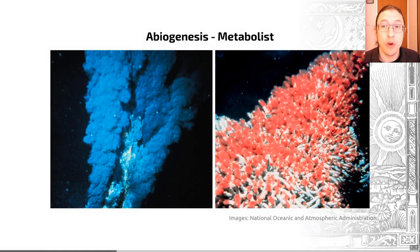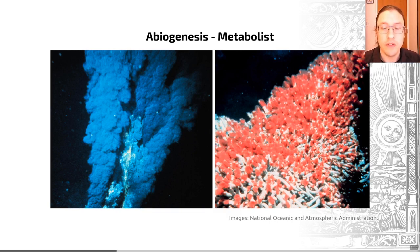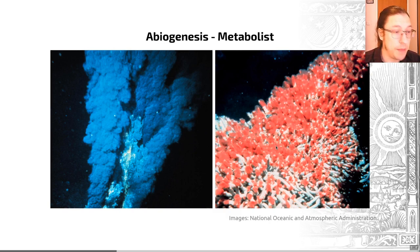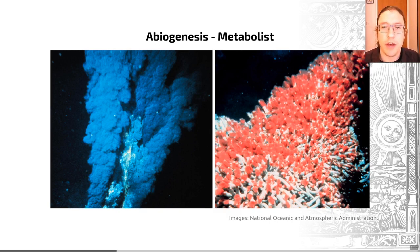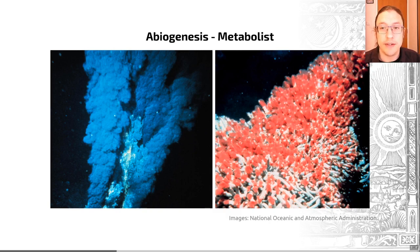Other theories do exist and one I want to highlight is the metabolist school of theories. These posit instead a hot and volcanic origin for life, with a primitive type of metabolic life coming first. These ideas would have occurred still in oceans but related to black smokers — you can see some examples on my slide here. Today black smokers host complex ecosystems of organisms, as seen in the image on the right, but back in the early Earth they would have looked fairly barren, such as the example on the left. Simple compounds within these chemical reactions, such as carbon dioxide and carbon monoxide in the vicinity of mineral-rich hydrothermal systems, could have entered into these reaction chains.